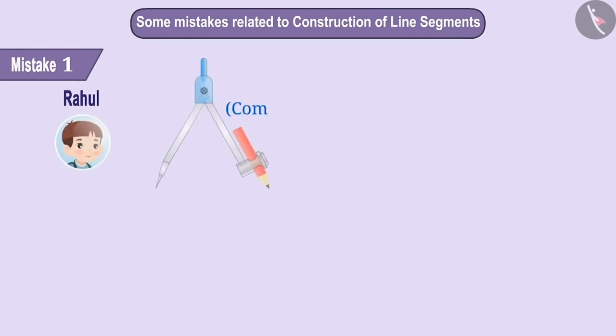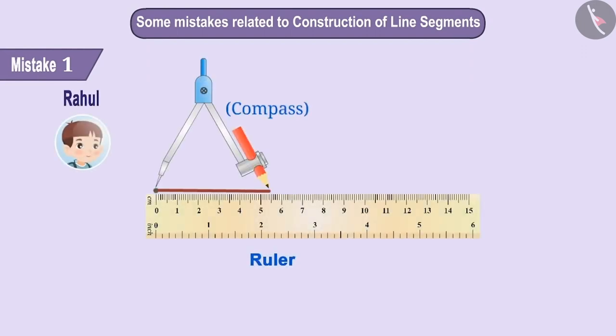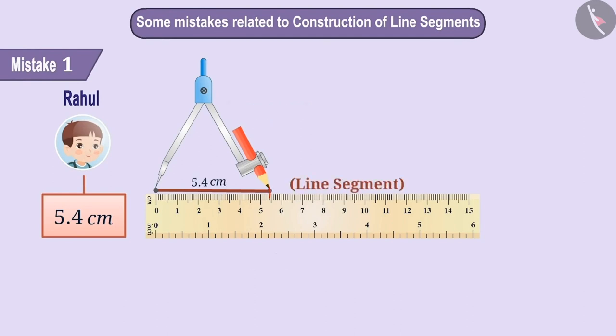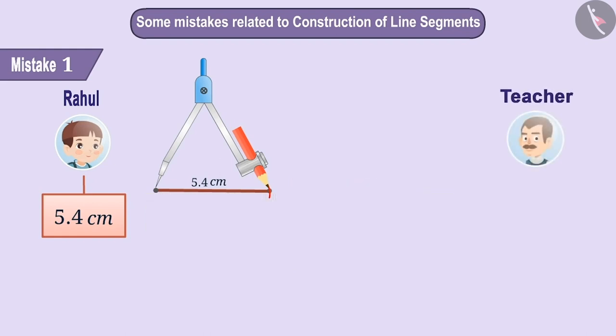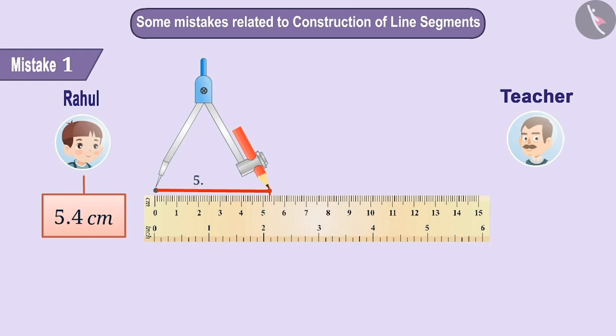Rahul made a line segment of length 5.4 cm using a compass and a ruler. When the teacher measured the length of this line segment, he found the length to be 5.3 cm. Find out what mistake Rahul may have made.